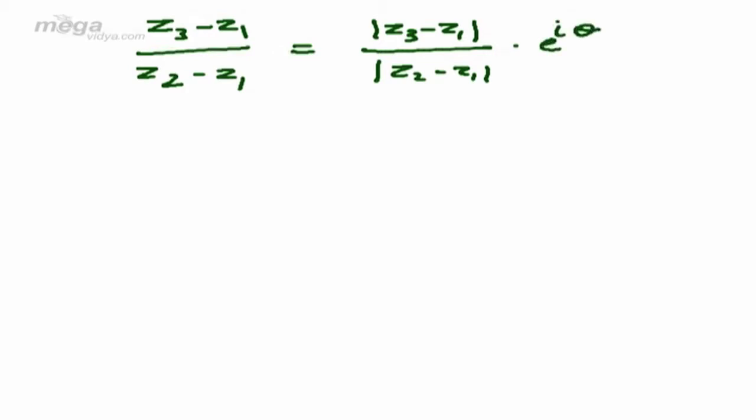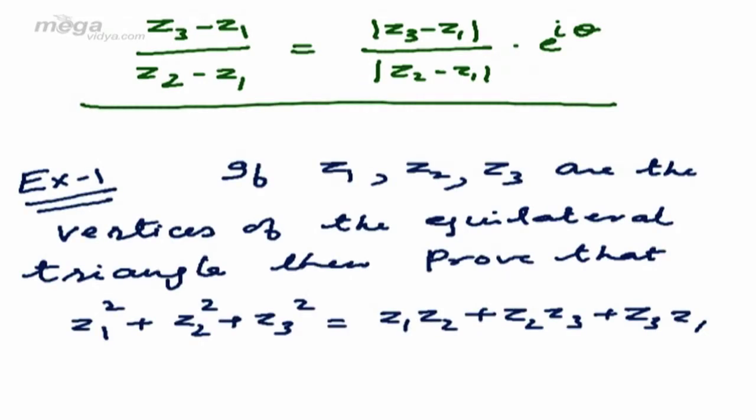This theorem is very important in solving geometrical problems based on complex numbers. Now let us come to Example 1. If Z1, Z2, Z3 are the vertices of an equilateral triangle, then prove that Z1² + Z2² + Z3² = Z1Z2 + Z2Z3 + Z3Z1.